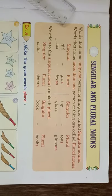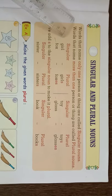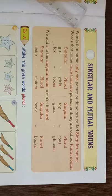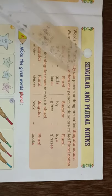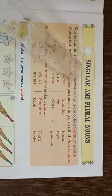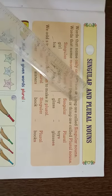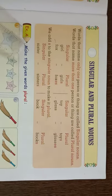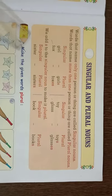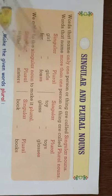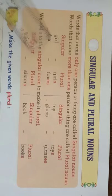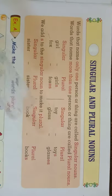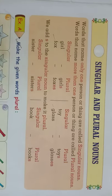What is a singular noun? Words that name only one person or thing are called singular nouns. For example: girl, fox, toy, glass.